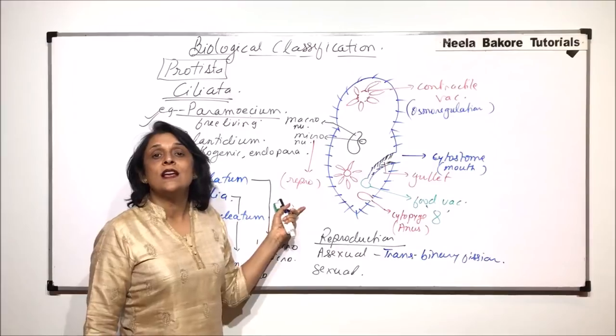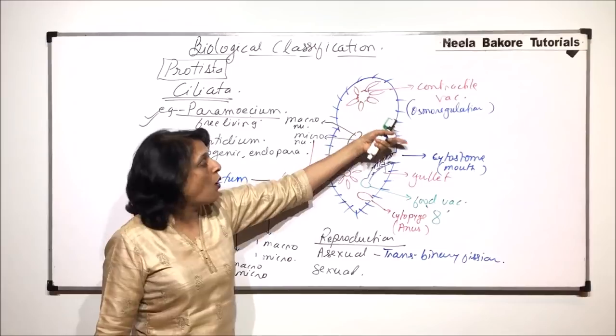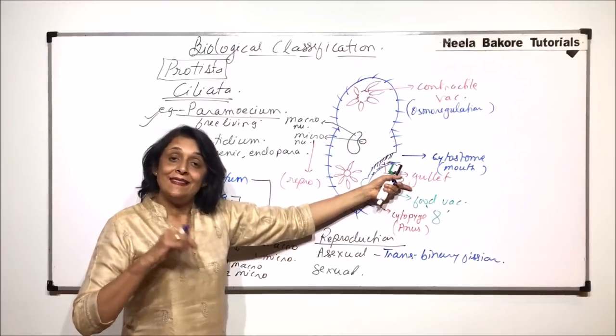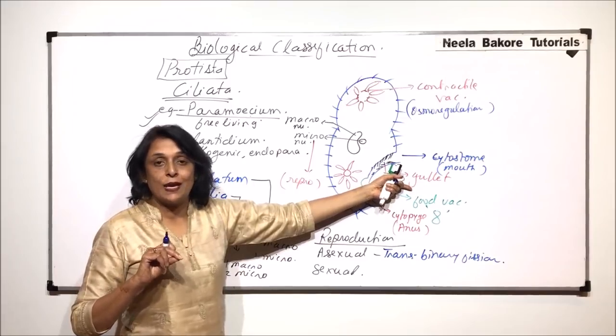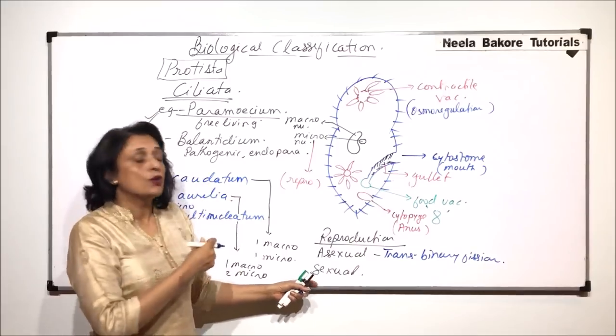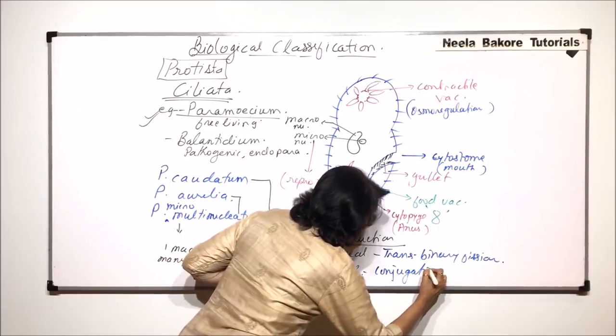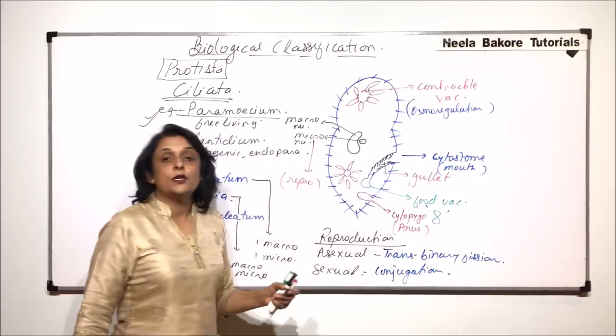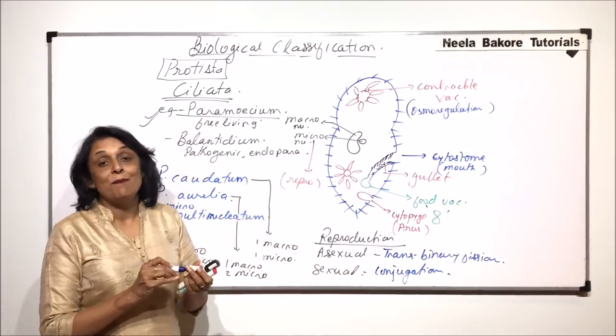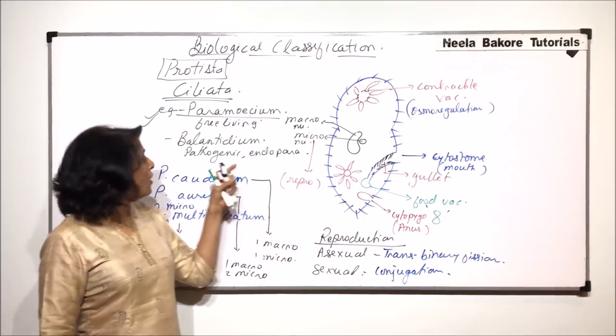So before the cell divides, it develops one more mouth or cytostome and one more cytopyge, and then the transverse division is going to take place. That is by transverse division. Sexual reproduction is first by conjugation. After conjugation, there is exchange of genetic material, and after that it again divides by binary fission.